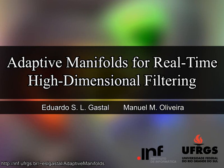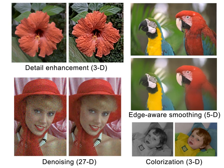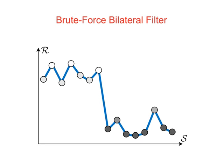We present an approach for high-dimensional filtering of images and videos in real time. High-dimensional filters are important building blocks in many image processing and computer vision applications. The most popular filter of this class is the bilateral filter, which for this one-dimensional signal mixes pixels based on their distance in a 2D space.